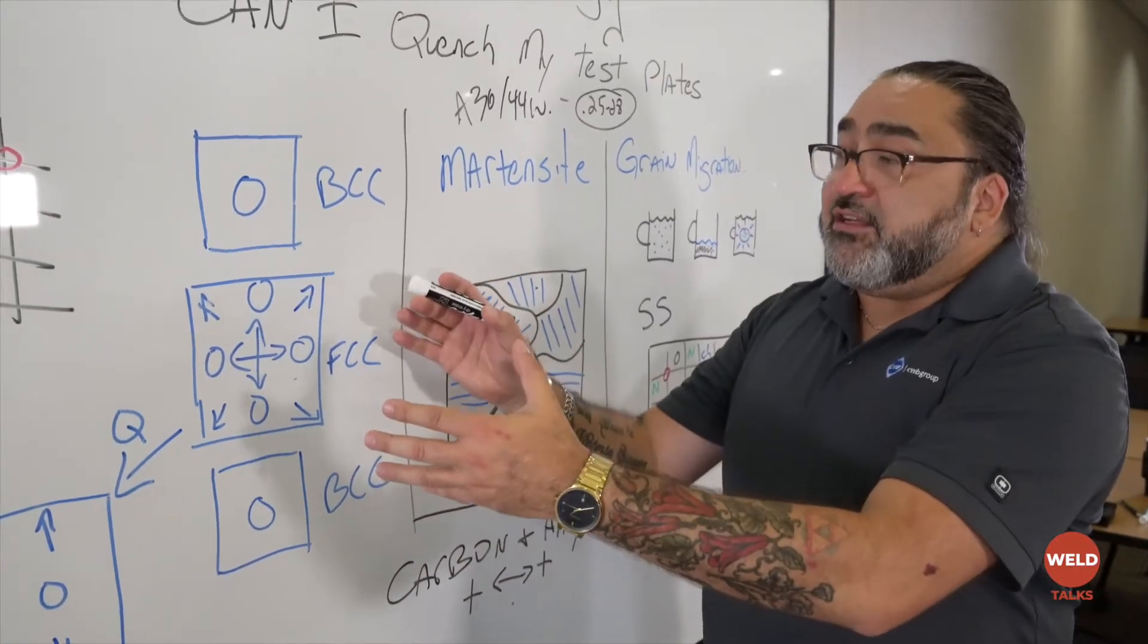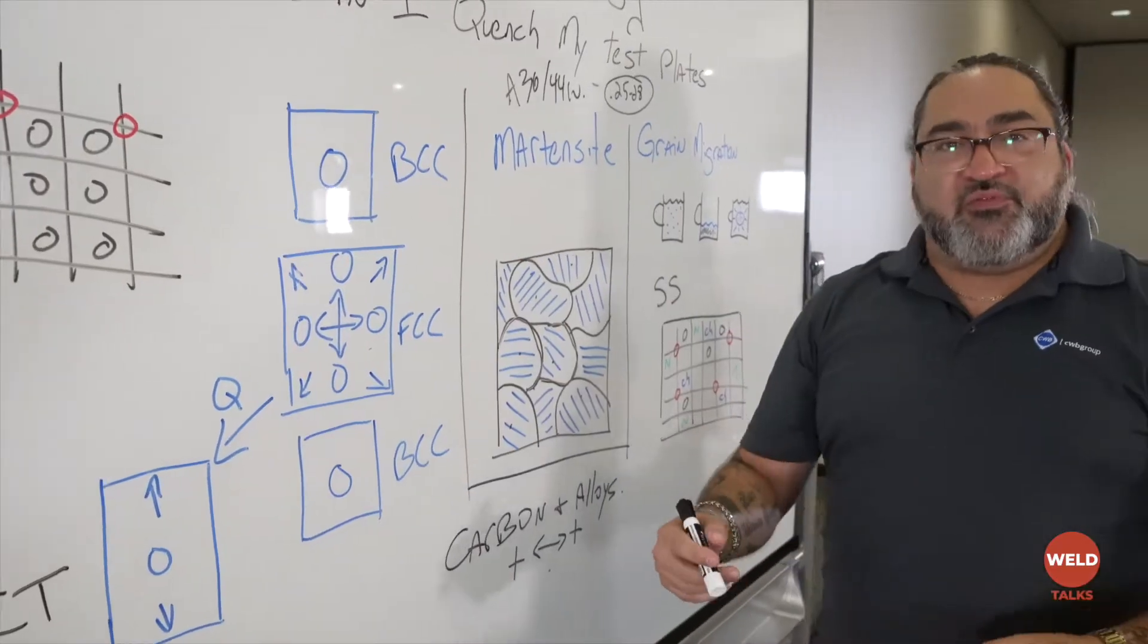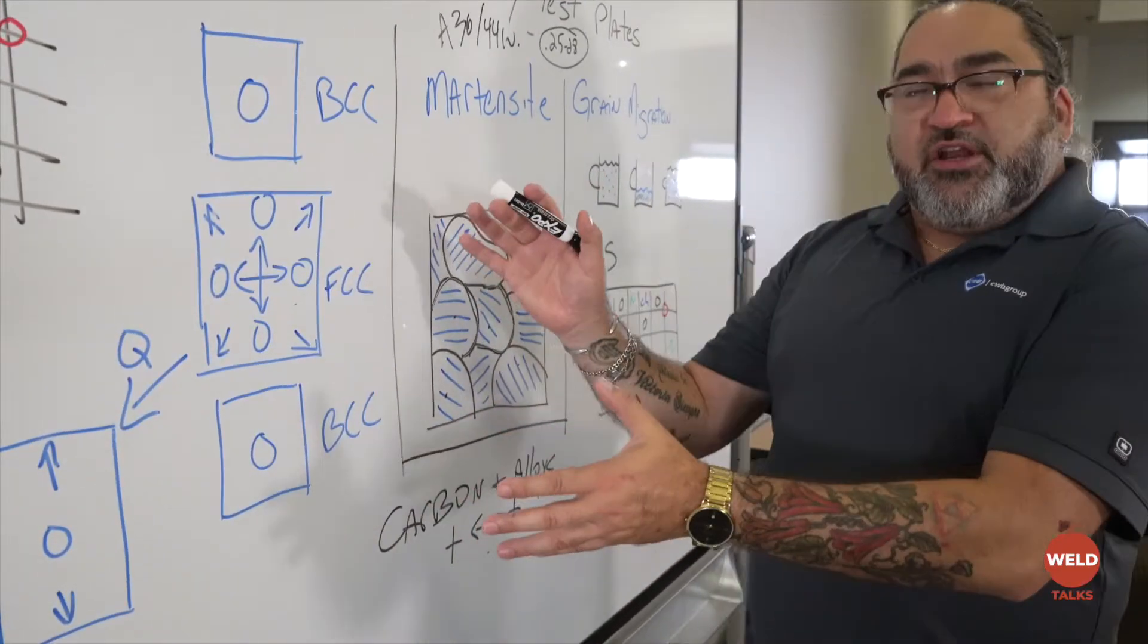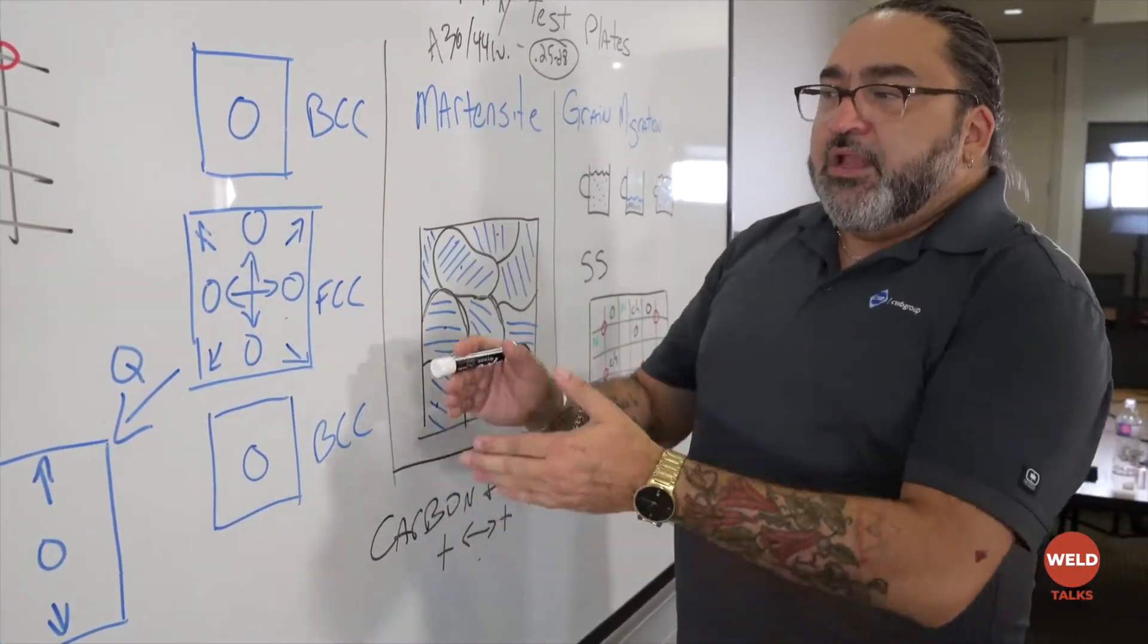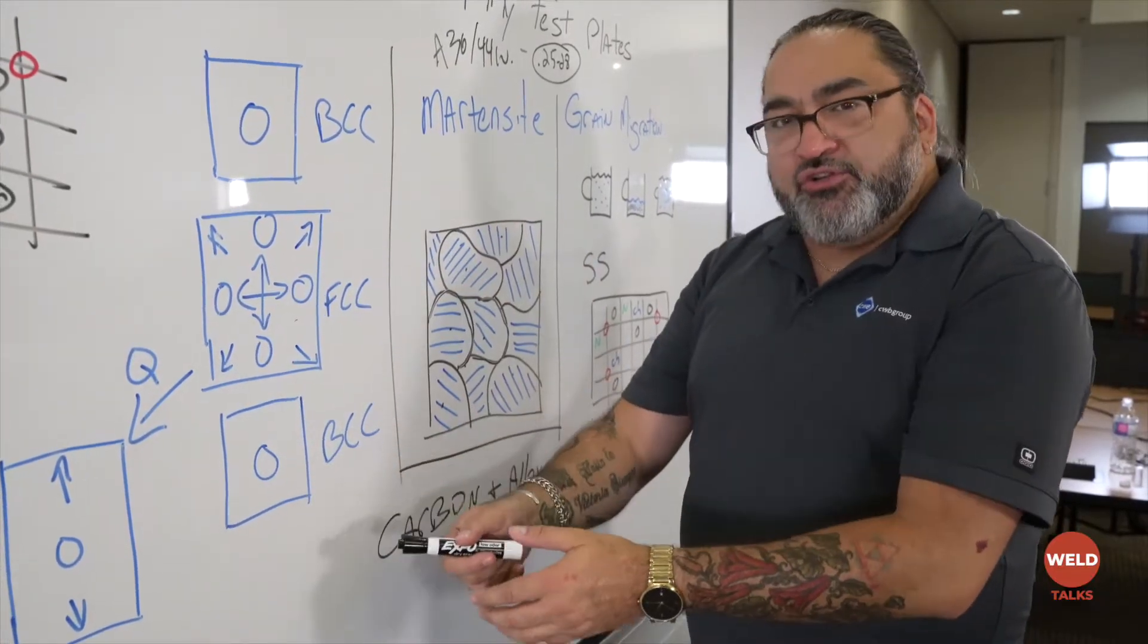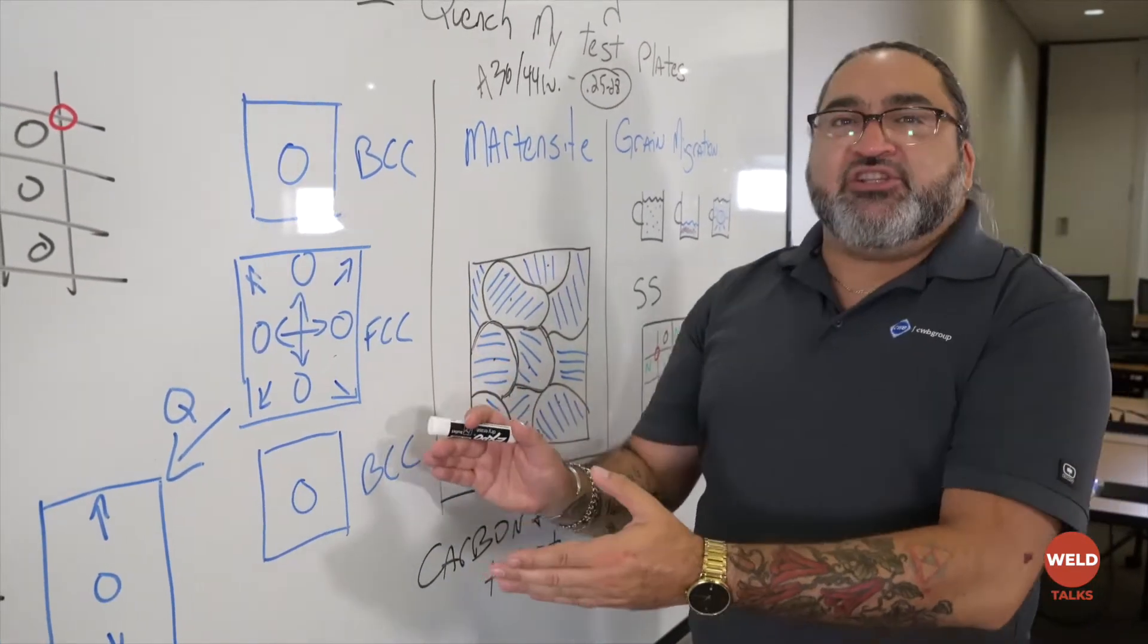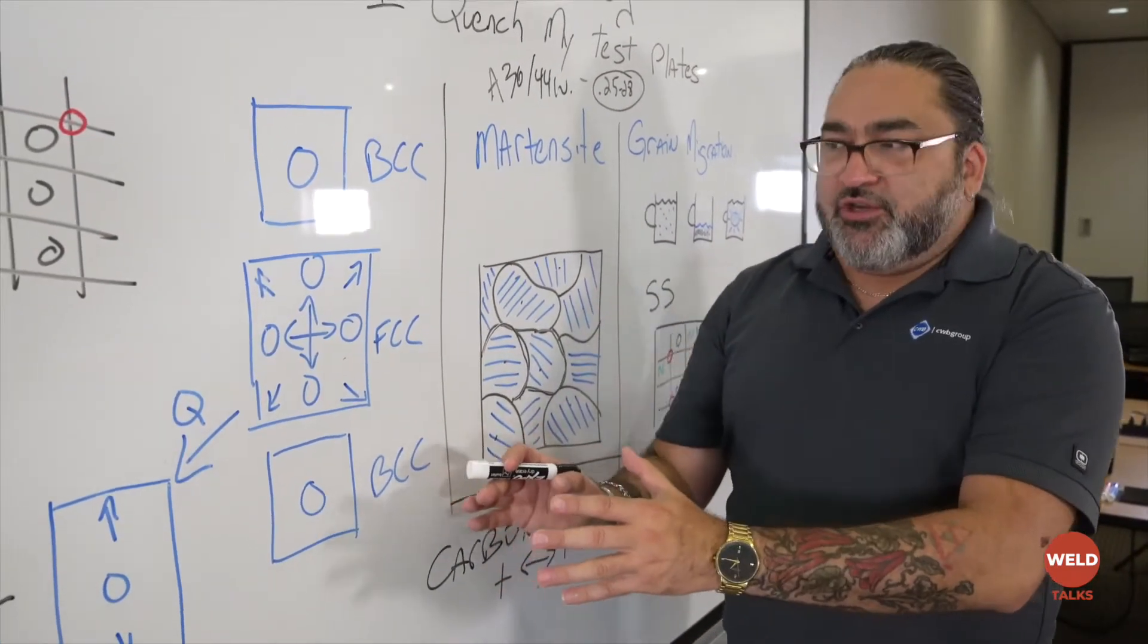But if I do things nicely, it'll shrink back down to the exact same shape it was before. This is a perfect scenario. I have my steel, I weld on it, it grows, it goes back to the original shape. No stress, no distortion, everything's perfect. That's best case scenario in any welding situation.